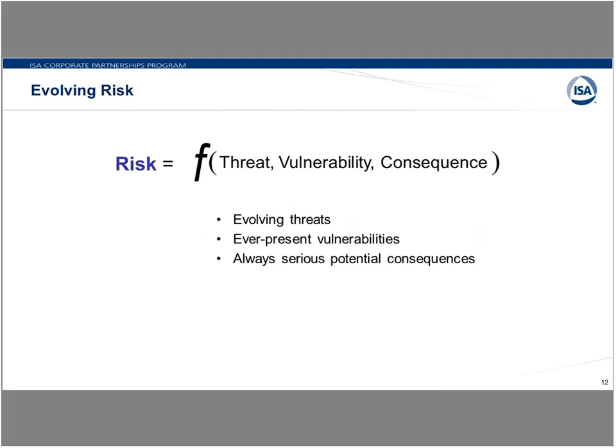We generally think of risk as being a function of threat, vulnerability, and consequence, where all of these have a probability element. The threats are evolving. Vulnerabilities seem ever present—we continue to strive for secure-by-design software with no vulnerabilities, but to my knowledge no one has ever achieved that. And there are always serious potential consequences, particularly in the industrial space.